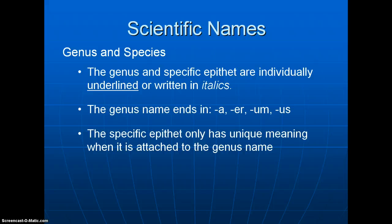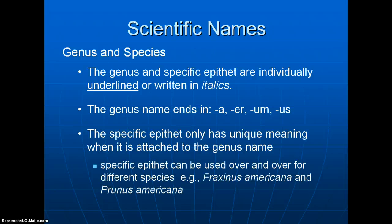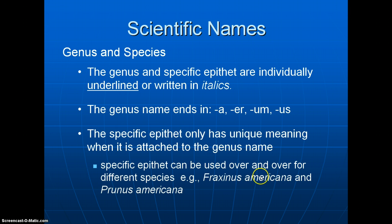The specific epithet only has unique meaning when attached to the genus name, but it can be reused across different genera. For example, you'll see Fraxinus americana for white ash and Prunus americana for a native plum — the same epithet americana attached to different genera.